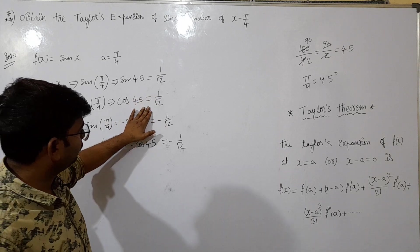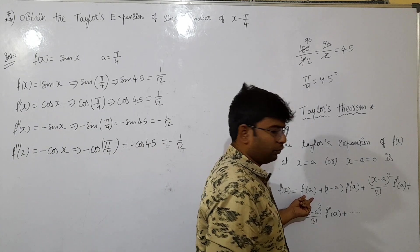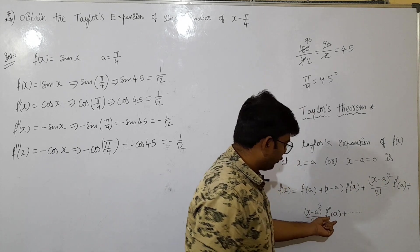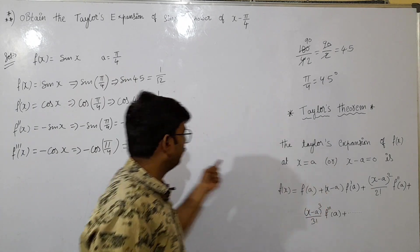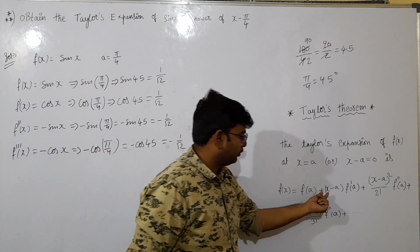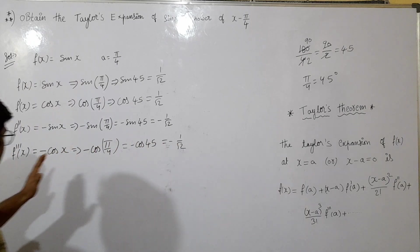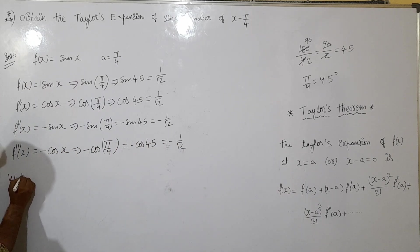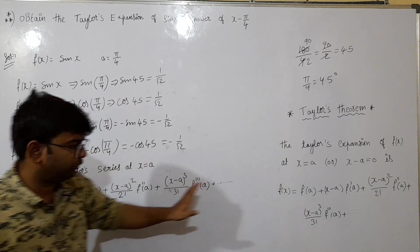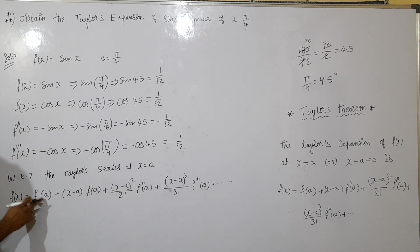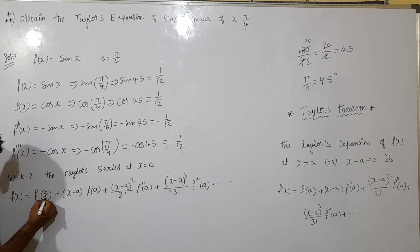So, the x values are equal to 1 by root 2, minus 1 by root 2, minus 1 by root 2. Now, the a value of f of a, f dash of a, f double dash of a — x value is equal to a value, which is pi by 4. Now we can substitute this formula.